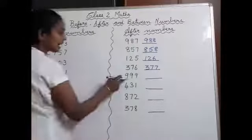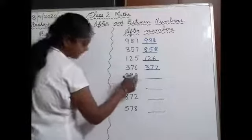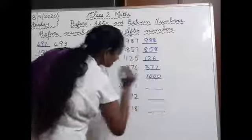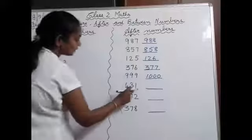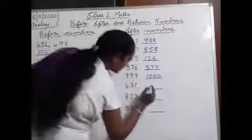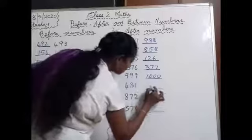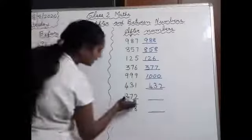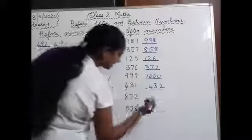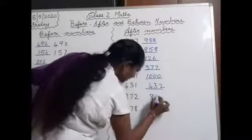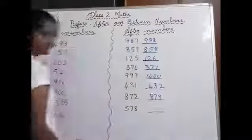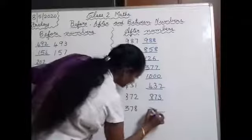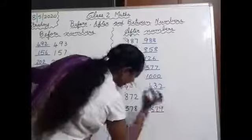Next, after 999, the number will be 1000. Next, 431 — after that, which number comes? 432. Next, 872 — after 872, the number will be 873. After 378, the number will be 379.